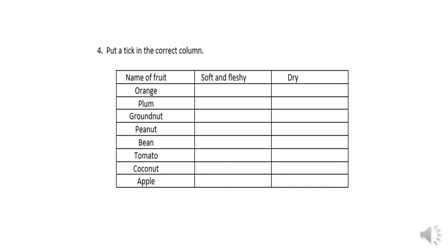Peanut is dry, bean is also dry, tomato is soft and fleshy. Coconut is soft and fleshy in fresh form, but you will write it in the dry column. Apple is also soft and fleshy.